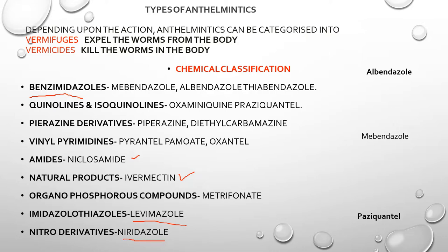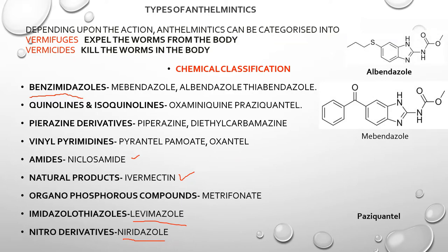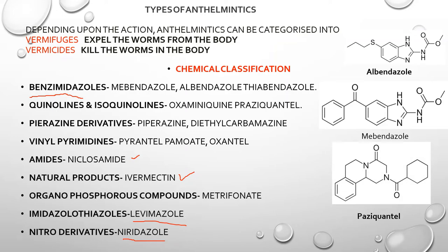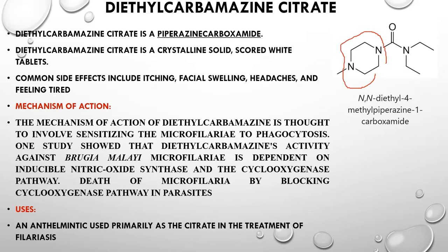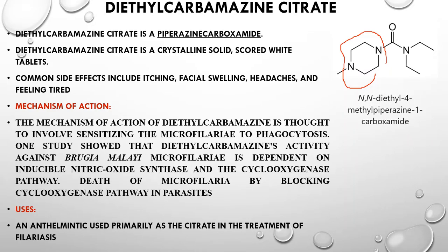Looking at some drug structures: mebendazole appears like this, albendazole appears like this — these are the anthelmintics. Now let's discuss the drugs mentioned in the syllabus. The first one is diethylcarbamazine citrate.